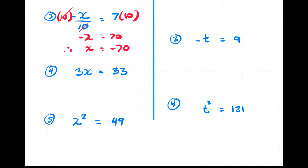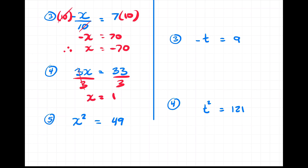Question number four says three times x equals 33. The inverse operation to get rid of that three is to divide by three. Whatever I do to the left, I do to the right — the threes cancel, leaving x equals 11. If I perform a check, I go back to three times x equals 33, put 11 inside the brackets, and three times 11 is 33 — and 33 does equal 33. So I know my work was correct.